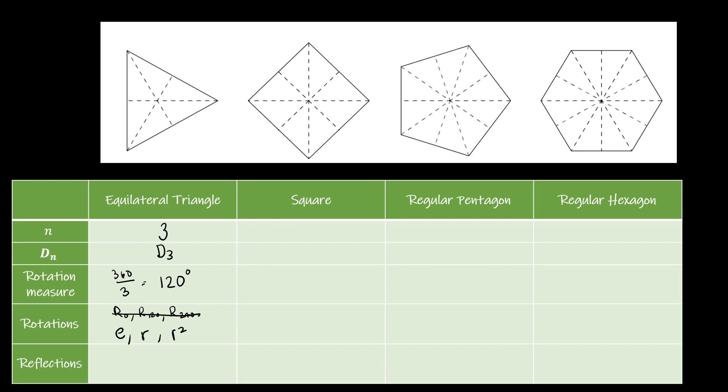And then the reflections are always going to be F and then RF and R squared F. So essentially, I'm taking everything from the rotations and taking it by F on the right.